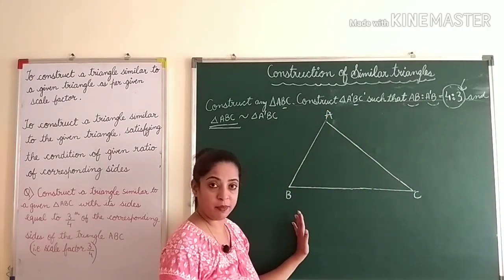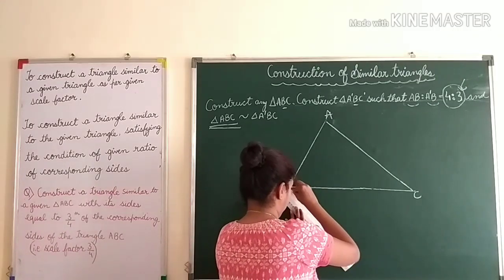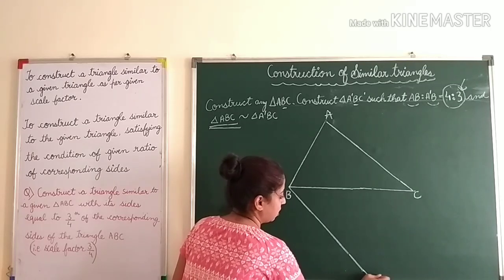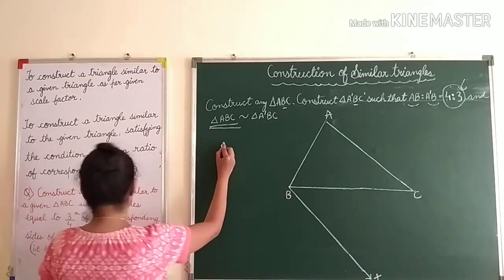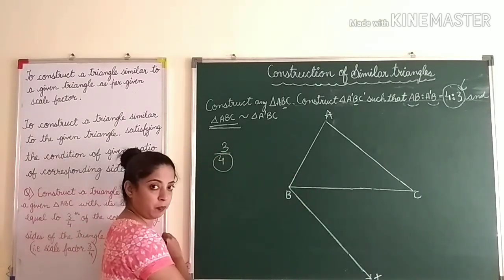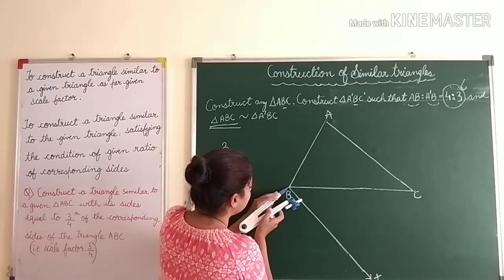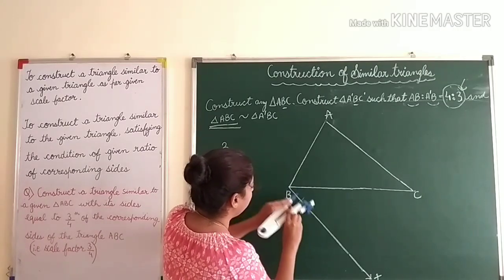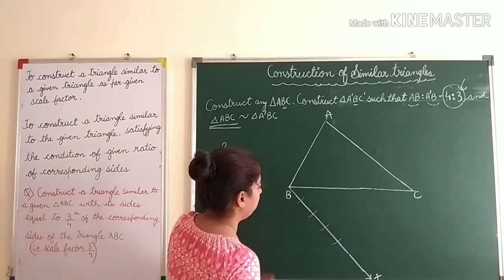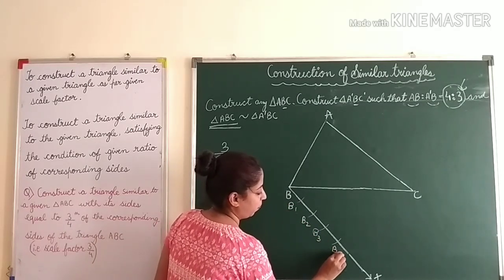Here I have drawn triangle ABC. Now from B I will take a ray making an acute angle — say ray BX. The scale factor is 3/4 and the ratio is 4 : 3, so we take the bigger number and make 4 divisions on this ray. Taking your compass, keep the pointer at B and mark 1, 2, 3, 4 — naming them B1, B2, B3, and B4.